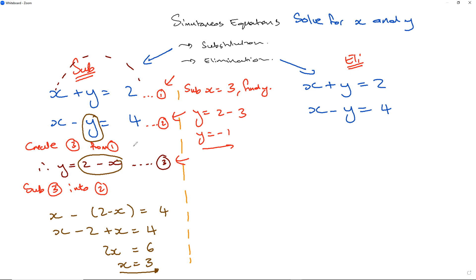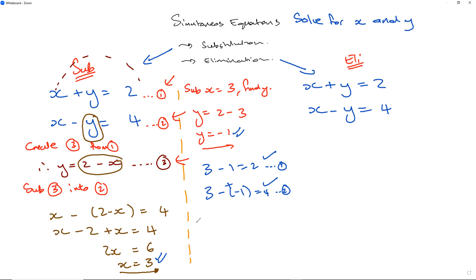Let's check: with x equals 3 and y equals negative 1, equation 1 gives 3 plus (negative 1) equals 2 — correct. Equation 2 gives 3 minus (negative 1) equals 4 — correct. The nice thing about simultaneous equations is that you can almost always check your answer quickly to guarantee you're right.